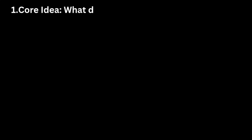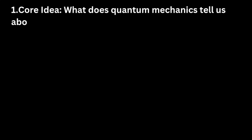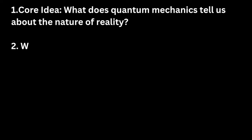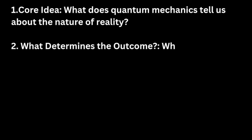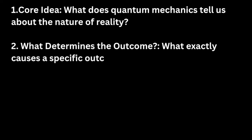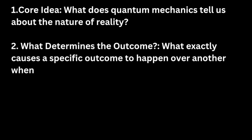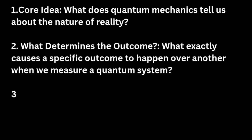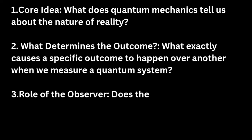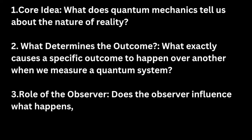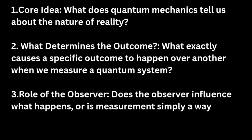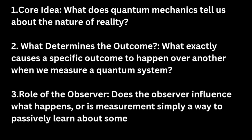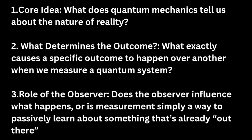The three big questions are: what does quantum mechanics tell us about the nature of reality? What exactly causes a specific outcome to happen over another when we measure a quantum system? Does the observer influence what happens? Or is measurement simply a way to passively learn about something that is already out there? Each interpretation of quantum mechanics provides its own answers to these questions.